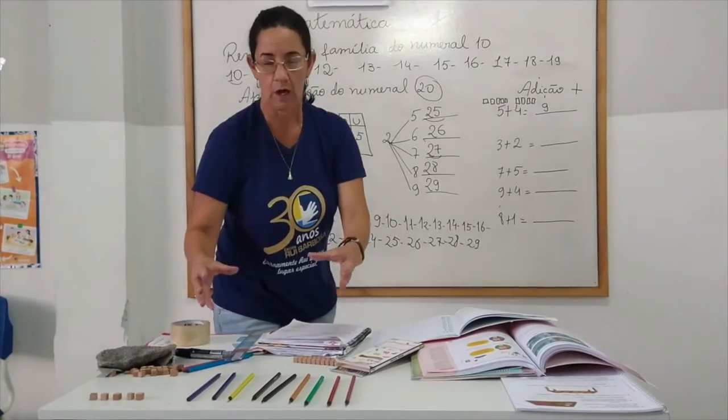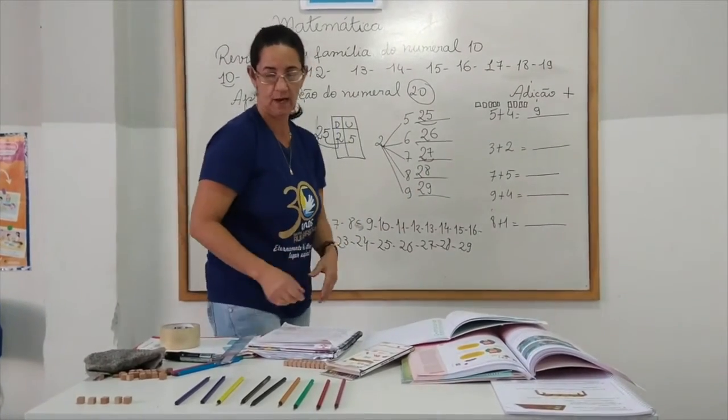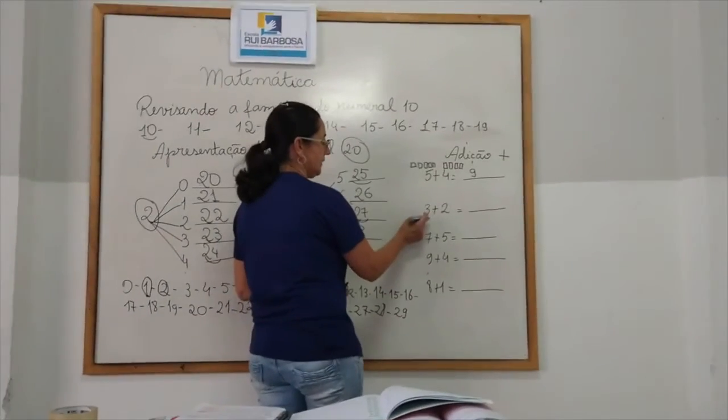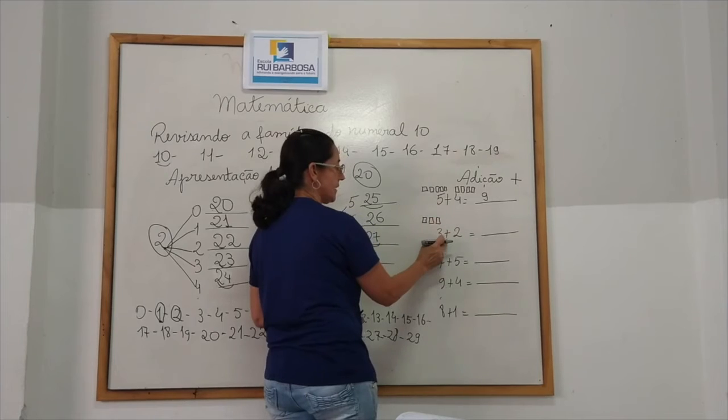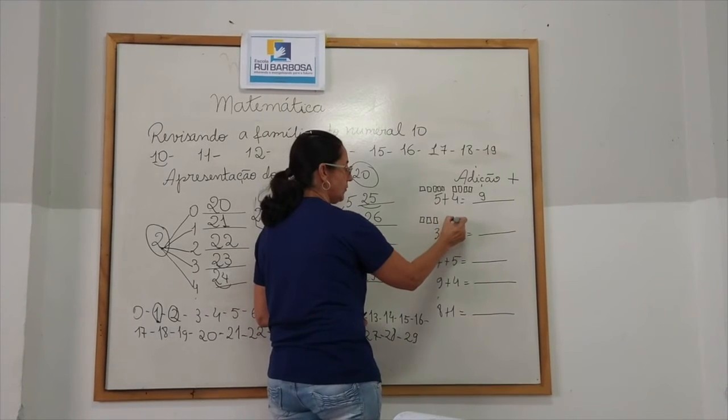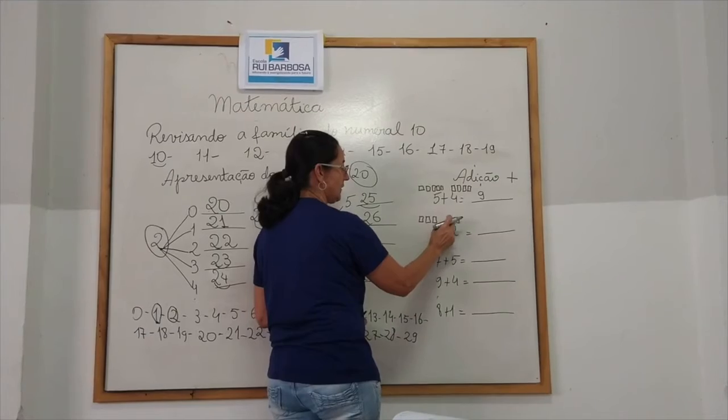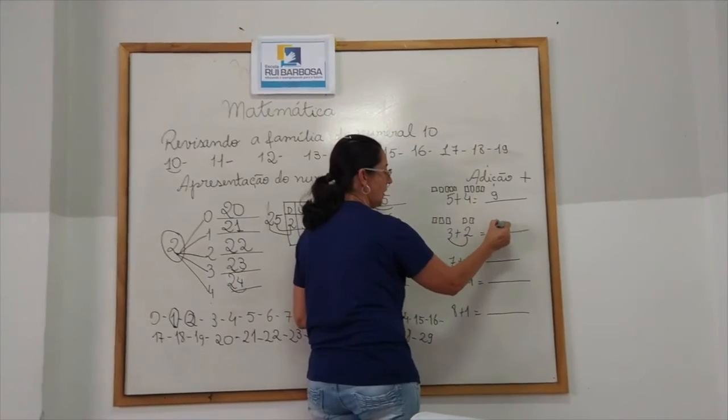Então, adicionar quer dizer juntar. Certo? E assim nós temos outros números. 3, 1, 2, 3. Mais 2. 1, 2, 3, 4, 5. 3 mais 2 é igual a 5.